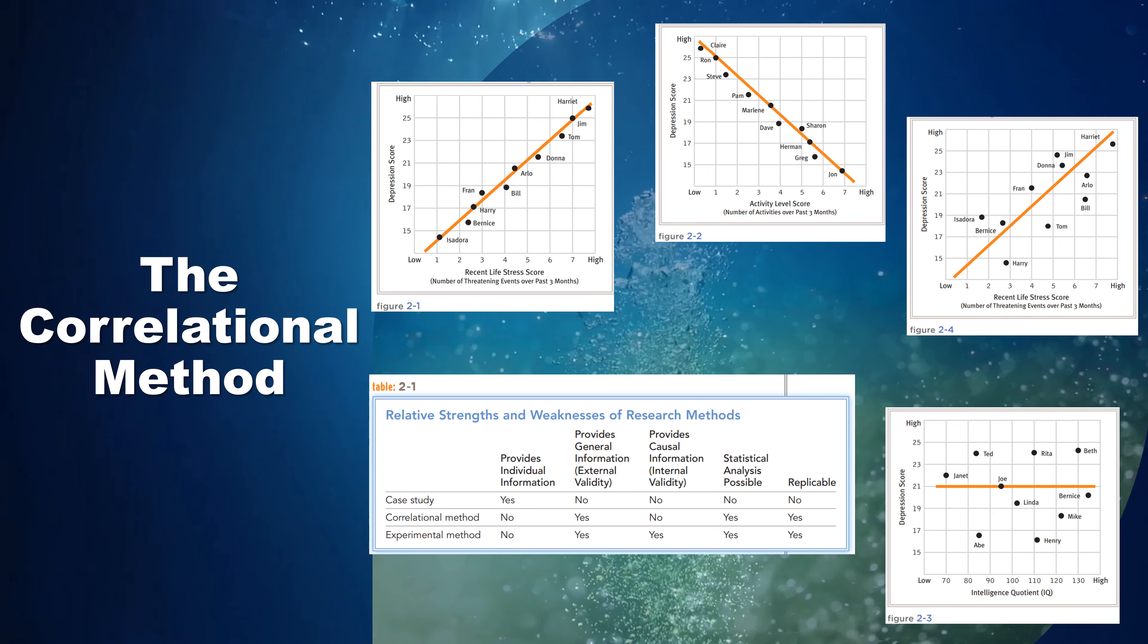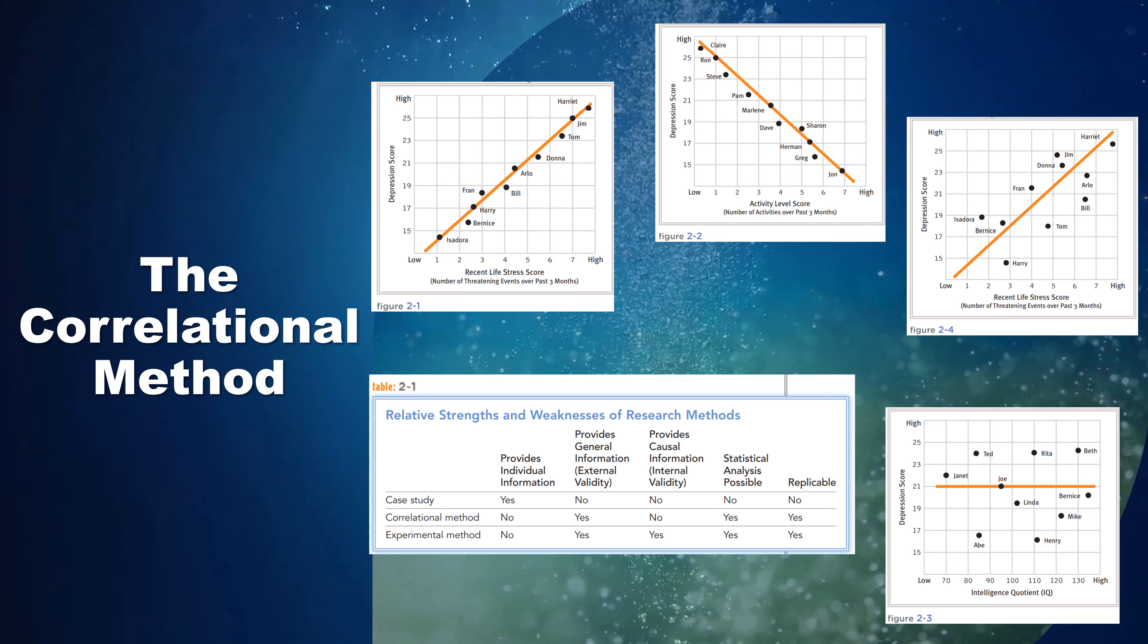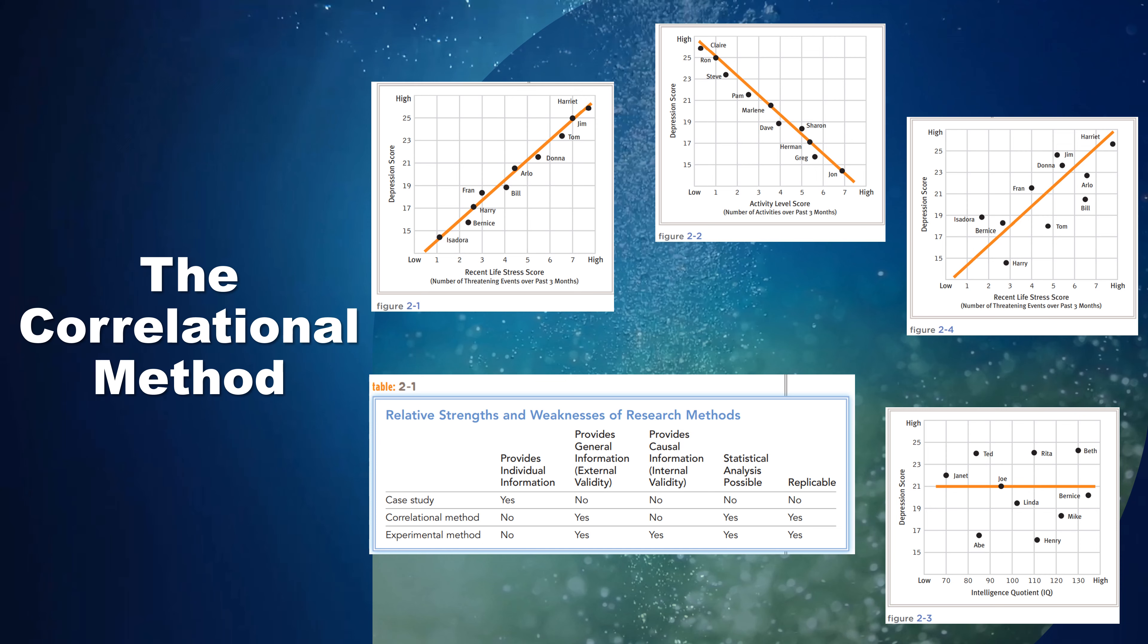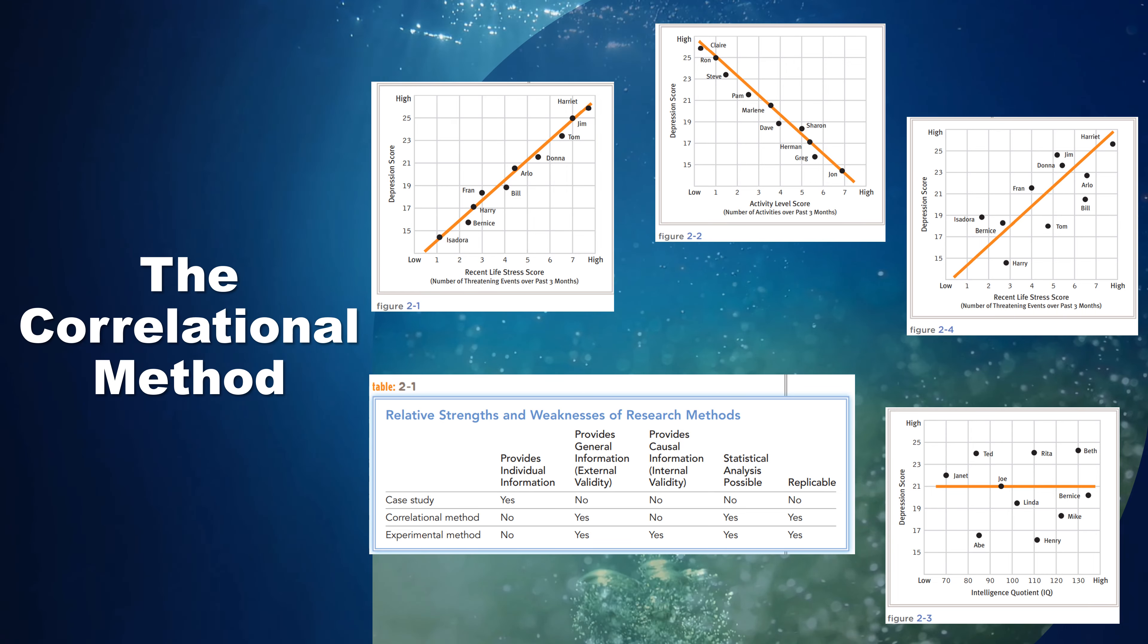When two variables are found to vary together very closely in person after person, the correlation is said to be high or strong. Look again at Figure 2-1. In this graph of a positive correlation between depression and life stress, the data points all fall very close to the line of best fit. Researchers can predict each person's score on one variable with a high degree of confidence if they know his or her score on the other.